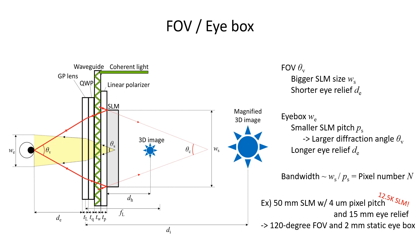However, unlike field of view case, the shorter eye relief reduces the static eye box because the traveling distance is getting shorter. So the overall field of view eye box bandwidth is totally determined by the pixel number, which is identical to the space bandwidth product in a conventional holographic display.